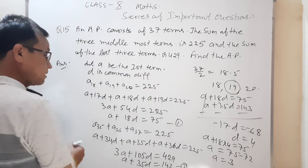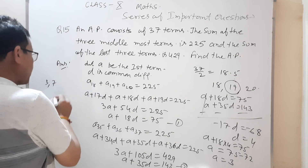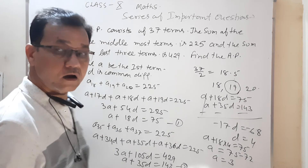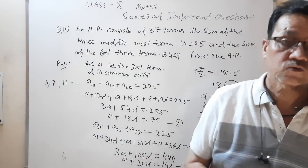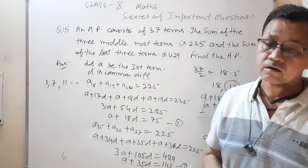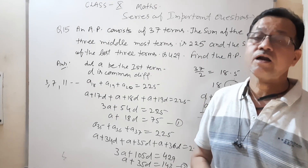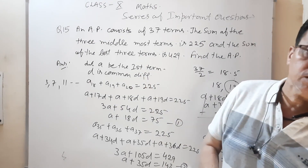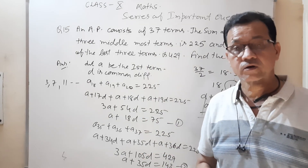AP पूछ रहा था — find the AP। a = 3 और d = 4 आ गया, तो AP इस तरीके से आ जाएगी: 3, 7, 11, 15, ... यह अच्छा सा question था, थोड़ा दिमाग खर्च हुआ। हमारी book से अलग सा था, इसलिए मैंने इसको लिखकर weightage दिया। आपको भी ज़रूर करना है।